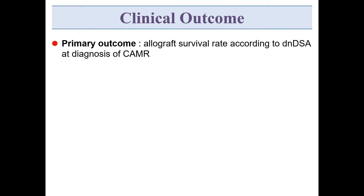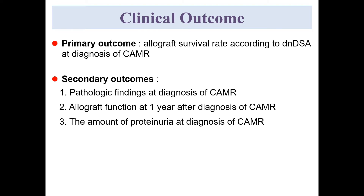The primary outcome was allograft survival rate according to de novo DSA at diagnosis of CAMR. Secondary outcomes were pathology findings at diagnosis of CAMR, allograft function at one year after diagnosis of CAMR, and the amount of proteinuria at diagnosis of CAMR.